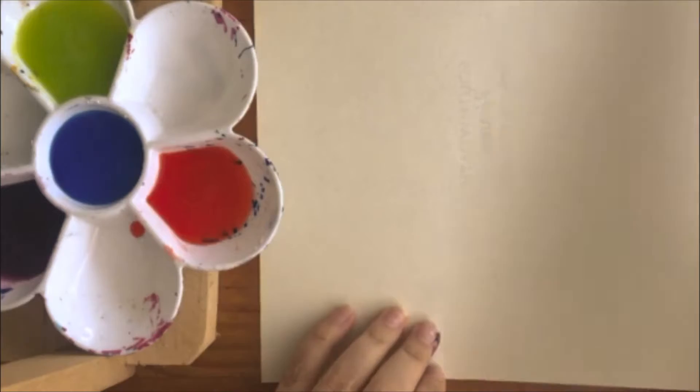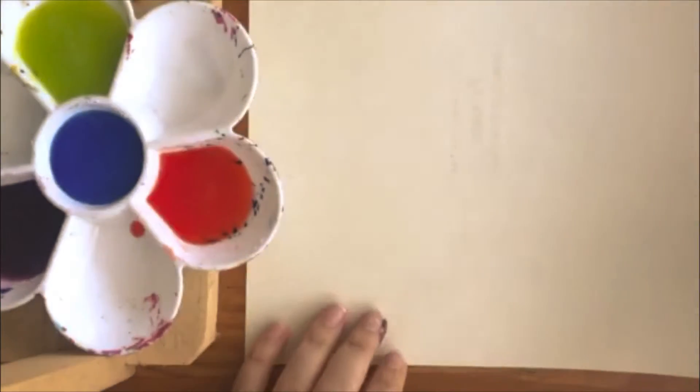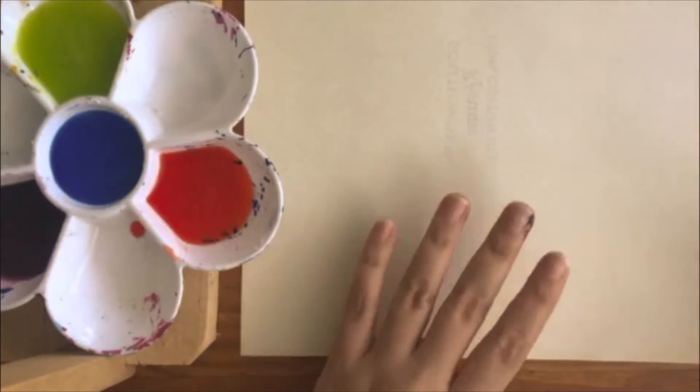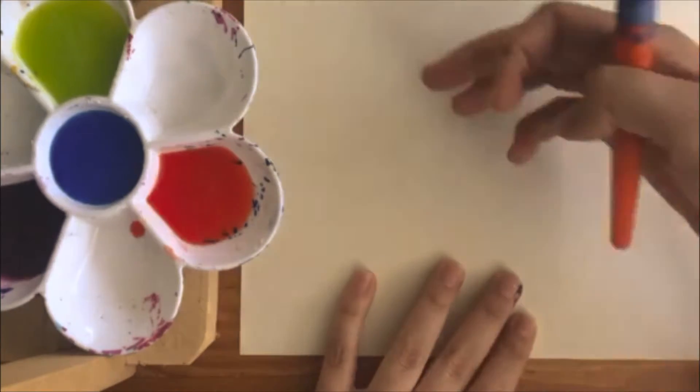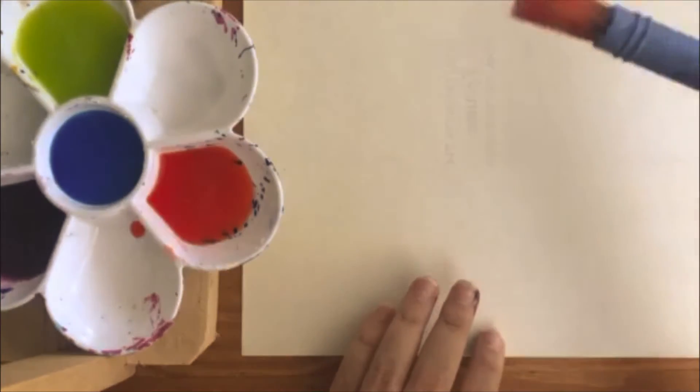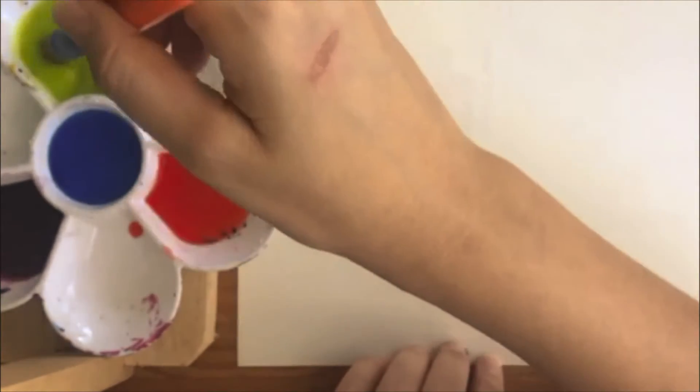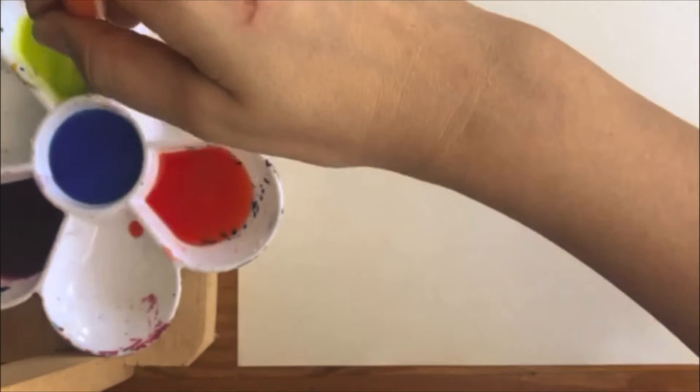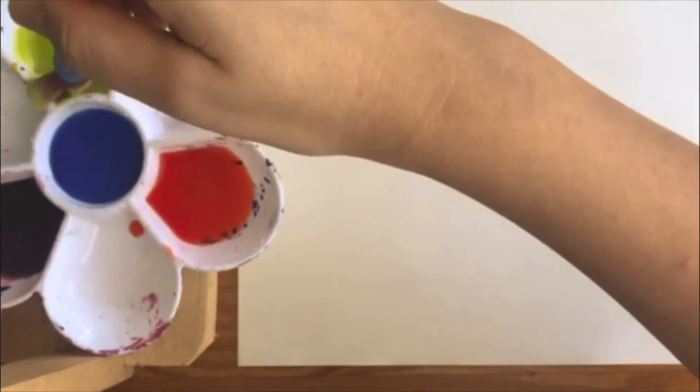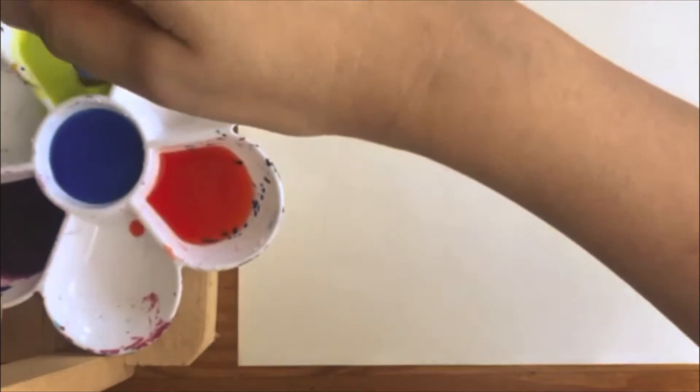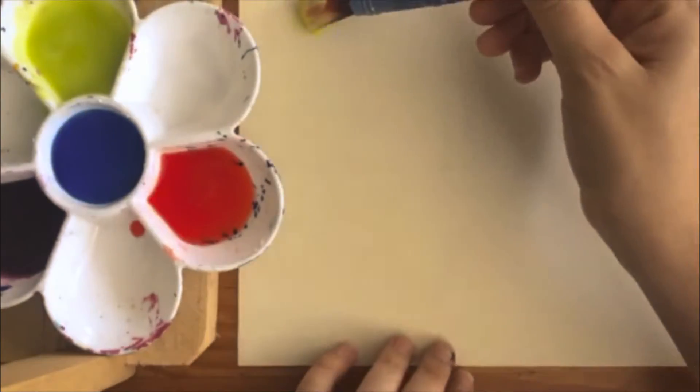Now I have a white piece of paper. It can be any type of paper—can be construction white paper, anything that you have in your house. So I'm going to start painting. Let me take my paint with my paintbrush and try to mix it a little bit.